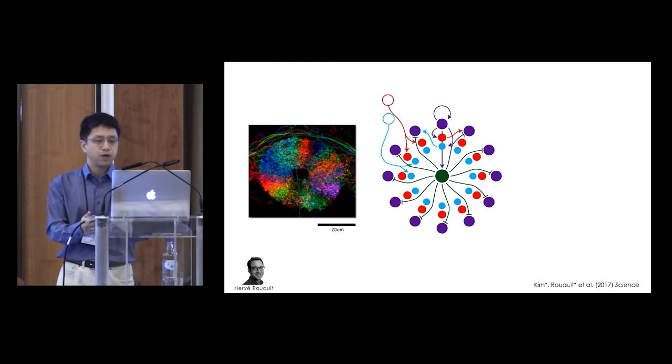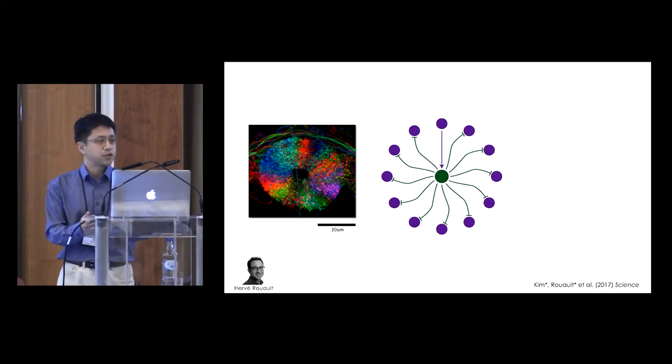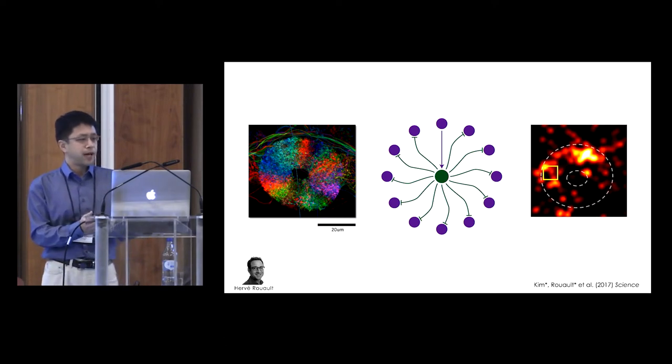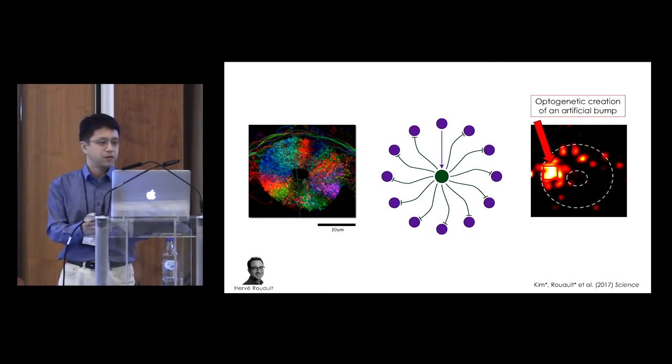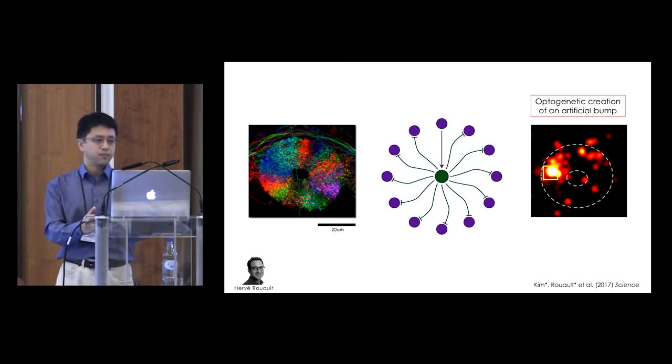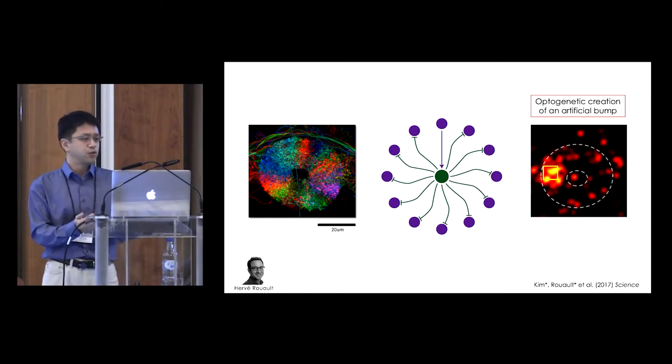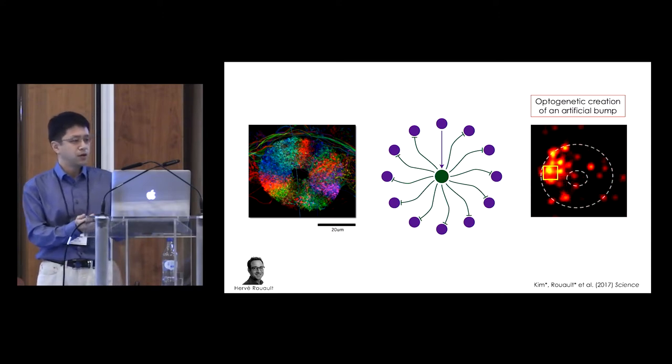In this movie, you see a bump at the top of the ellipsoid body. Now, if you optogenetically activate the left side of the ellipsoid body, the existing bump would disappear and a new bump would appear via mutual suppression, essentially resetting the fly's perception of its heading.